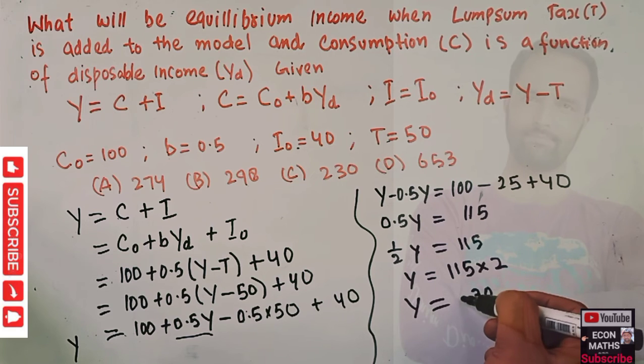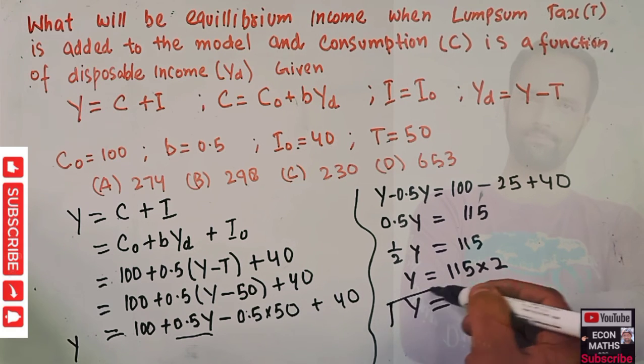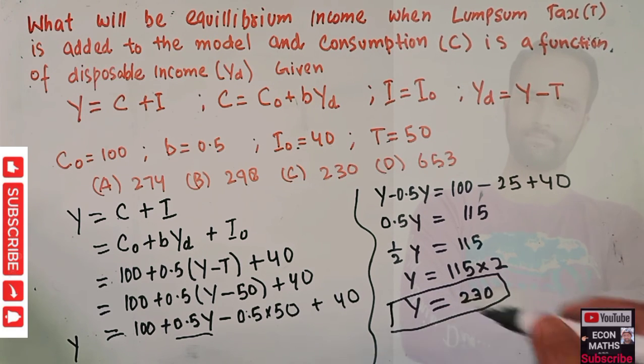Two fives are 10, two ones are 2, so we get income is 230 in this national income model. That means our equilibrium level of income will be 230. I hope I make myself clear, thank you.